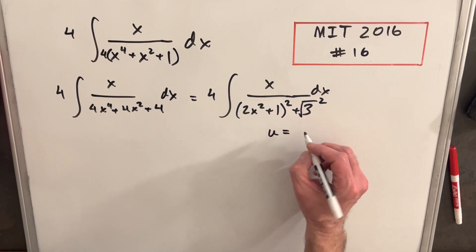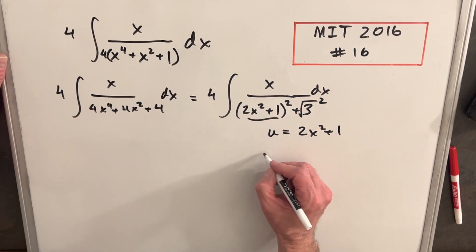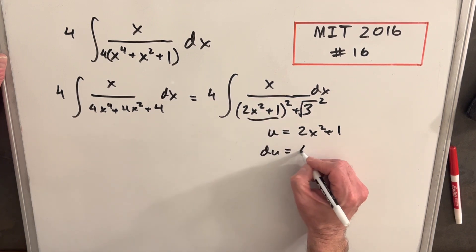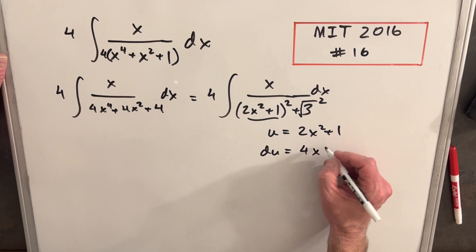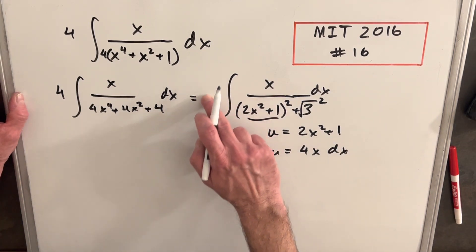So I'm going to say my u is going to be 2x squared plus 1, all this stuff. And then we take the derivative. We have 4x. The derivative of 1 is just 0.